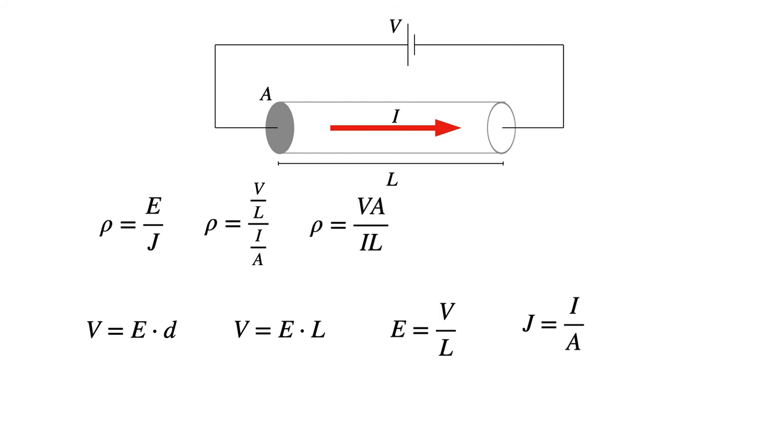Simplifying the expressions, separating the V over I so that I realize that is resistance. So the resistivity is the resistance of the wire times the cross-sectional area over the length.